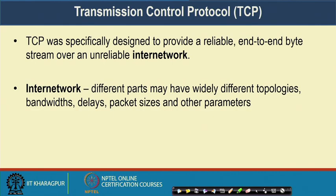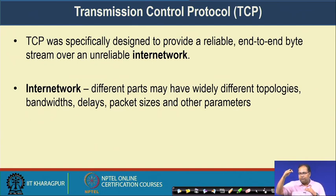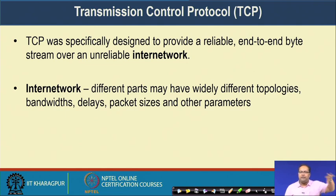TCP was specifically designed to provide a reliable end-to-end byte streaming over an unreliable internetwork. By unreliable internetwork, the IP-based network layer we are considering provides unreliable service because of buffer overflow from intermediate routers — there is always a possibility of packet drop. Whenever there is a packet drop from intermediate routers the network layer does not take care of that. So the transport layer, if it wants to provide a reliable service, needs to take care of that packet drop. TCP is a protocol which supports this reliability on top of this unreliable internetwork.